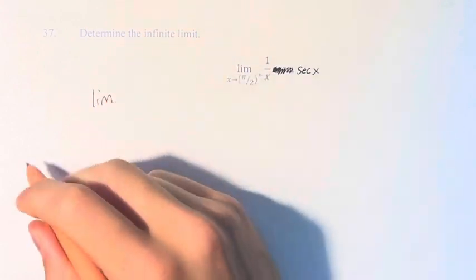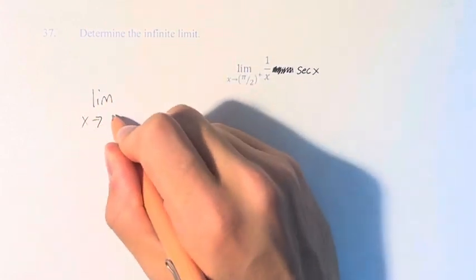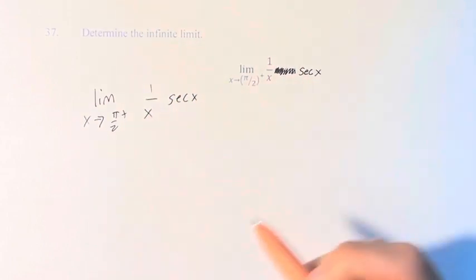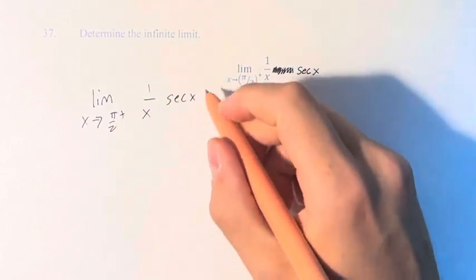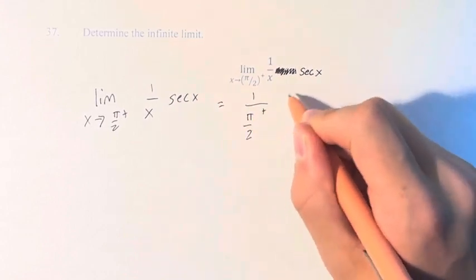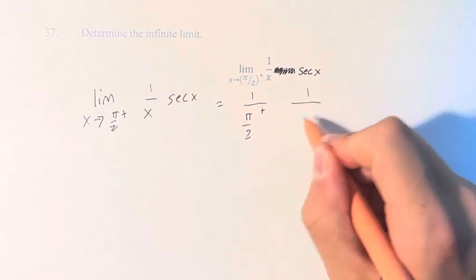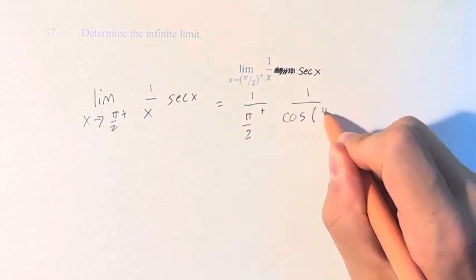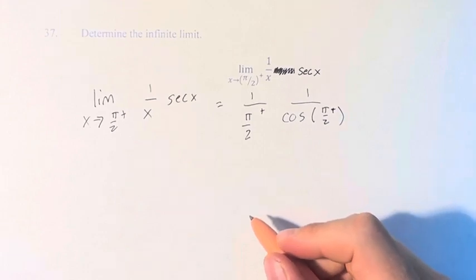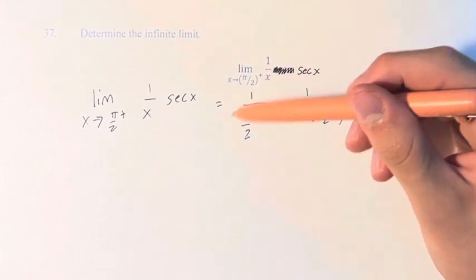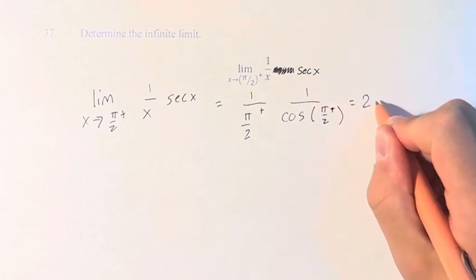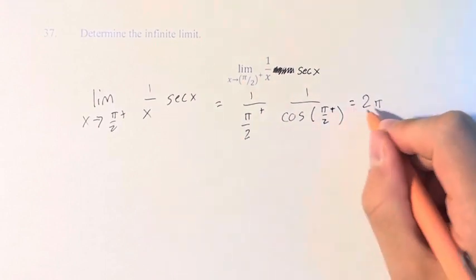So if we're writing the limit right here, what we have to do is plug in our value into the function. So this is 1 over pi halves from the right times secant, which is 1 over cosine of pi halves from the right. So 1 over pi halves — as we get closer and closer to pi halves — just approaches... sorry, 2 over pi.